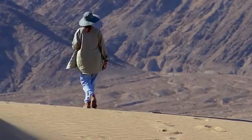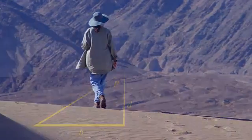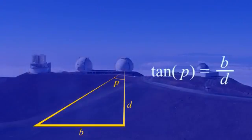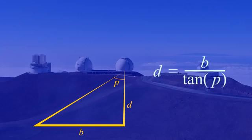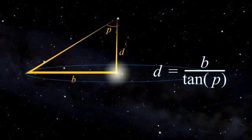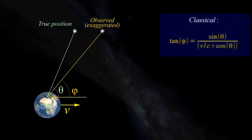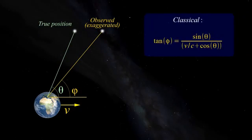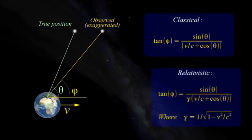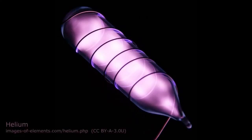Welcome back. In the last part we went over the heads of geocentrists with the revelation that trigonometry works at any distance, and we saw how stellar aberration confirms that Earth orbits the Sun whilst allowing us to cross-check key properties of that orbit. In this part we'll see what else light has to say about the universe.